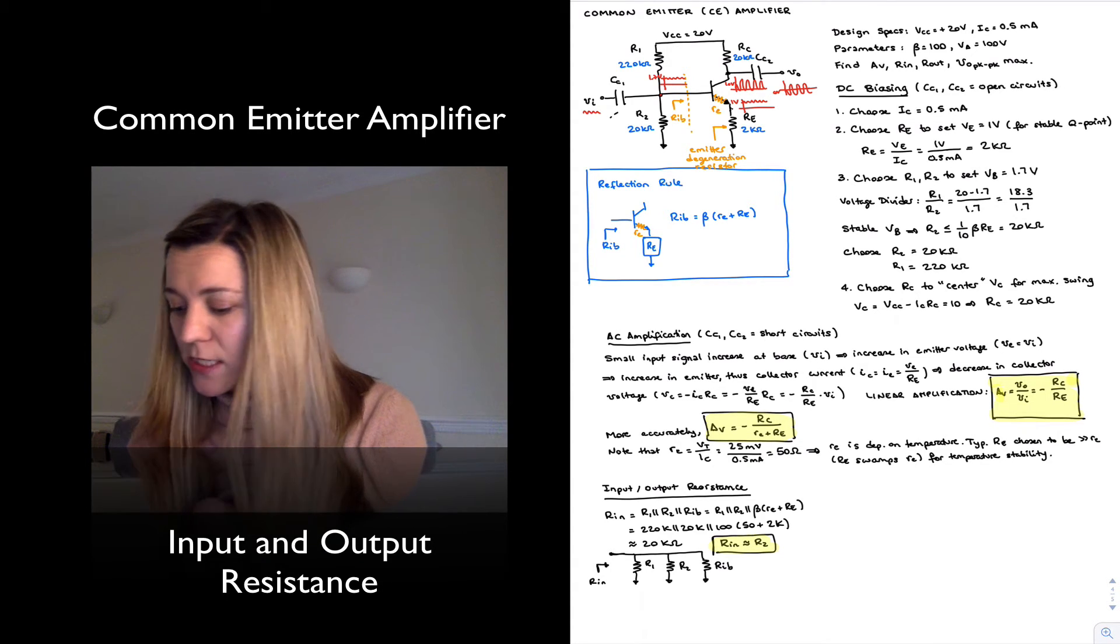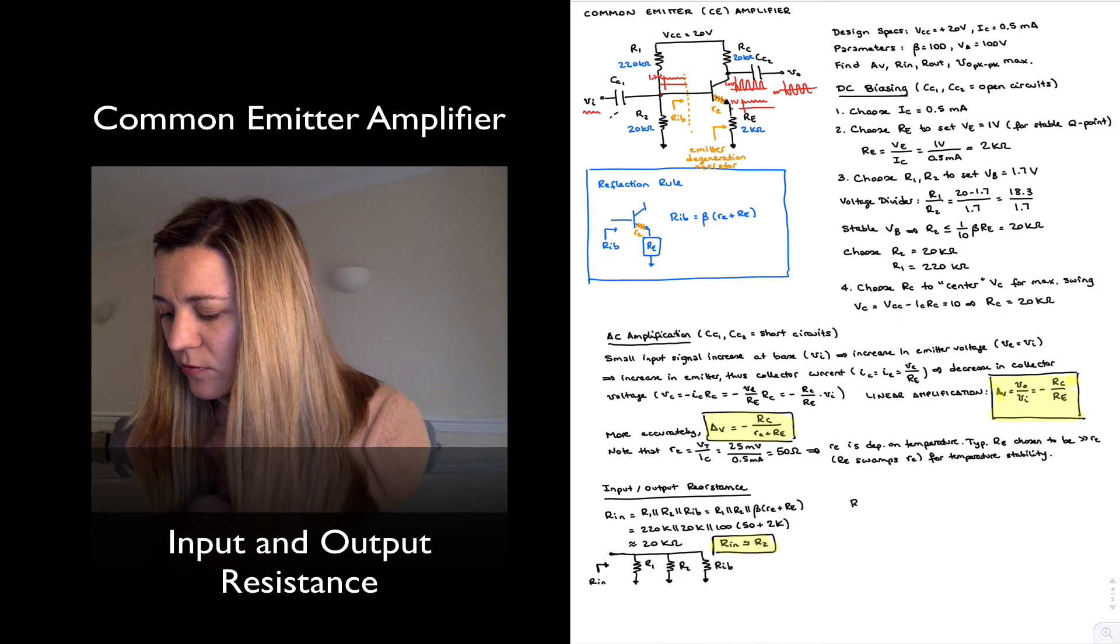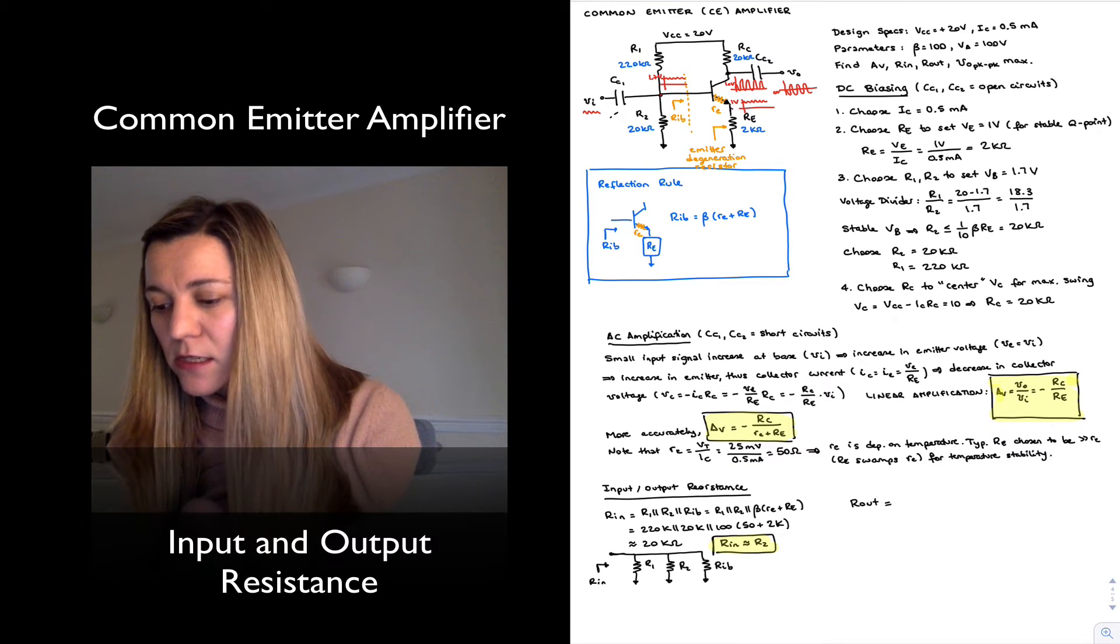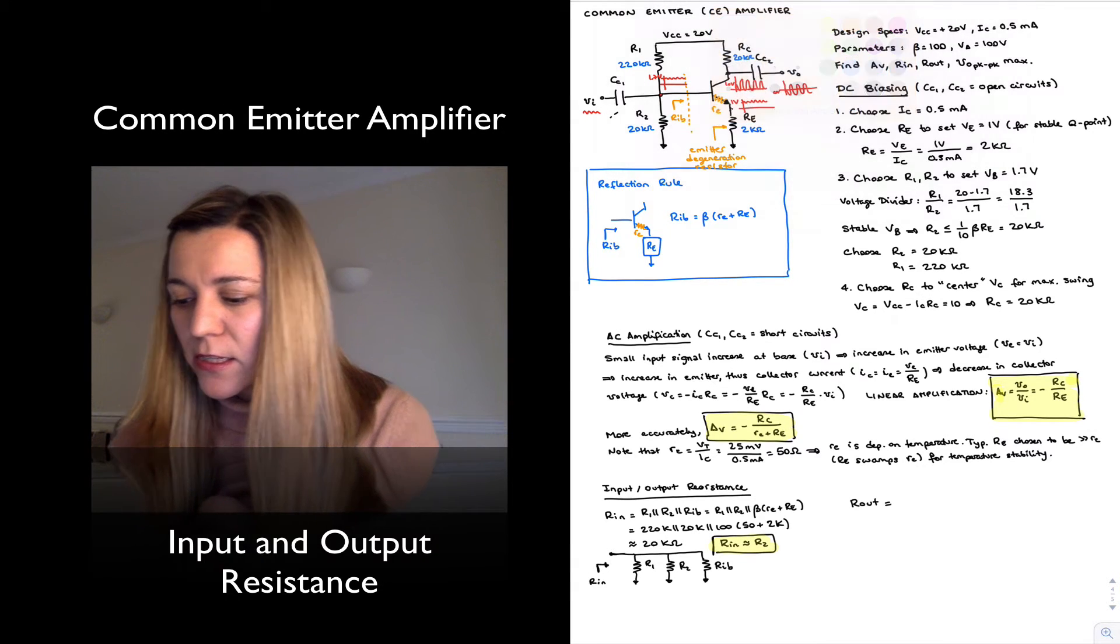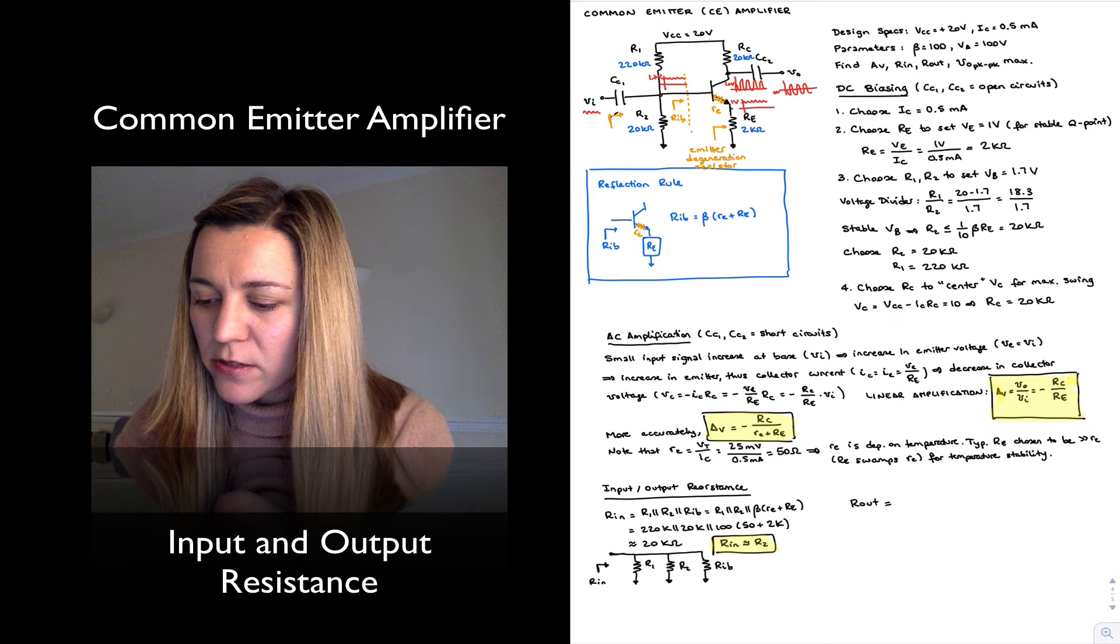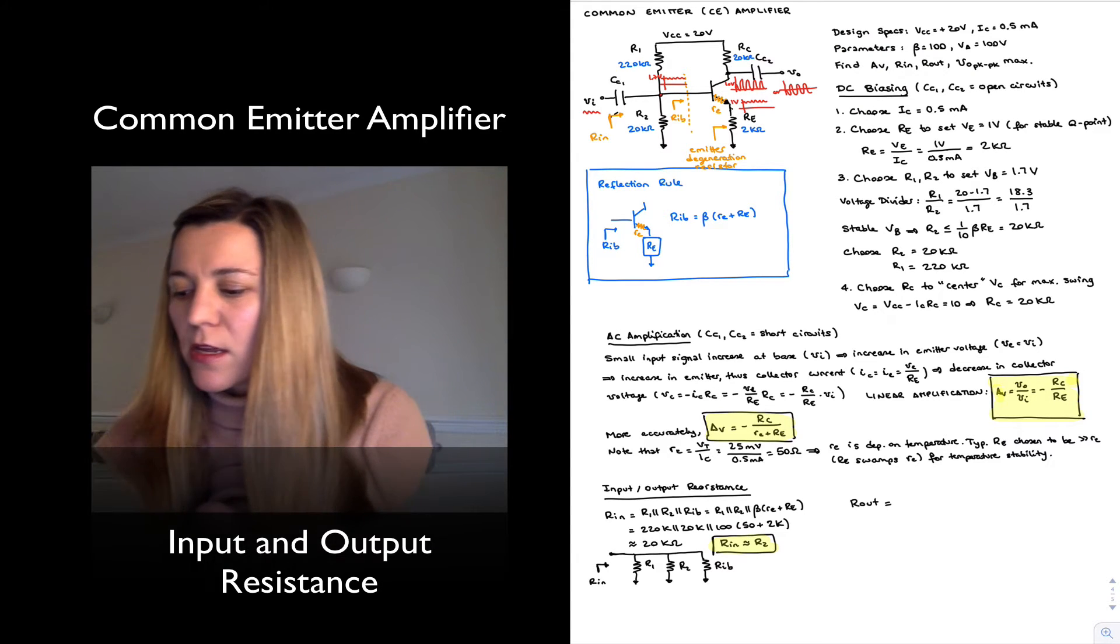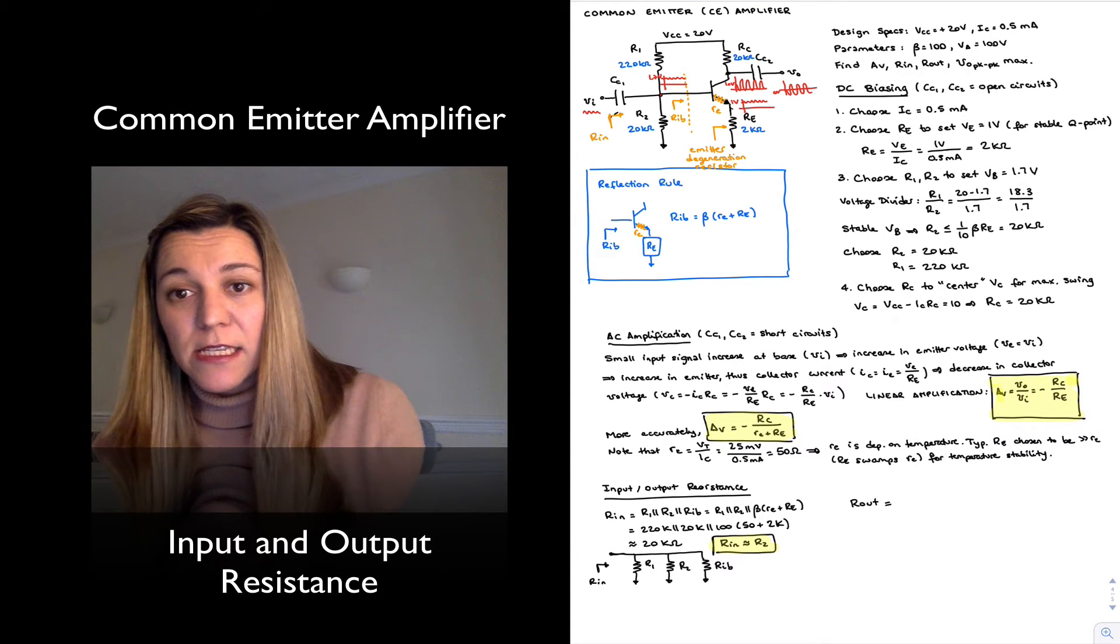And let's take a look at the output resistance. The output resistance—just as the input resistance was the resistance looking into the circuit, so we're looking from here, this is Rin—the output resistance will be the resistance seen when you're looking from the output of the circuit towards the circuit.